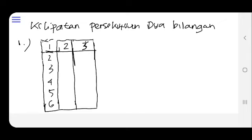Nanti kita akan hitung hasil dari perkalian ataupun kelipatan dari dua bilangan ini. Kita langsung aja ya, 2 kali 1 adalah 2, 3 kali 1 adalah 3. Kita angka 2 dulu ya, kita selesaikan: 2 kali 2 adalah 4, 2 kali 3 adalah 6, 2 kali 4 adalah 8, 2 kali 5 adalah 10, 2 kali 6 adalah 12.